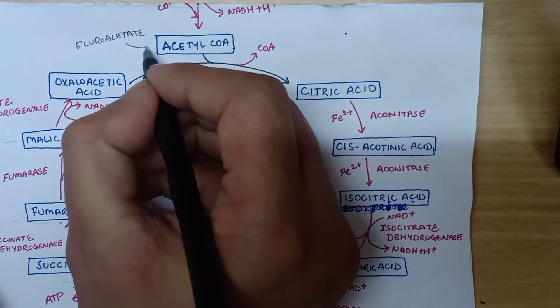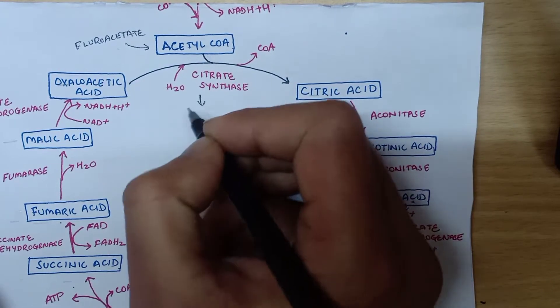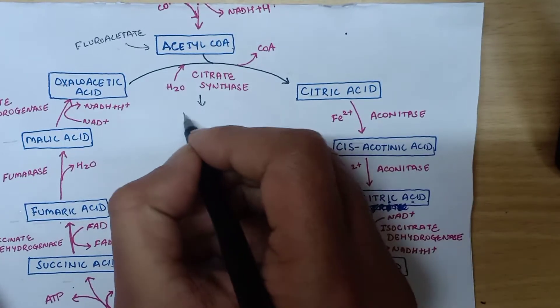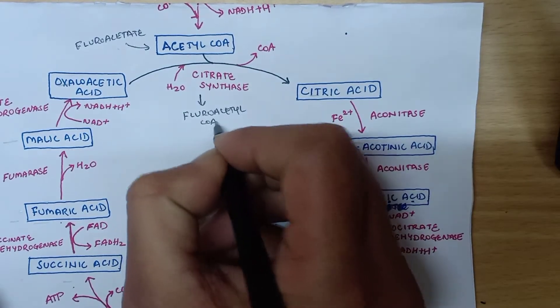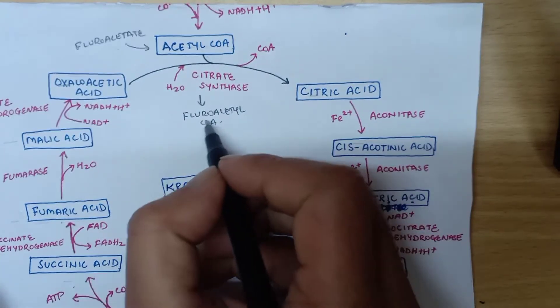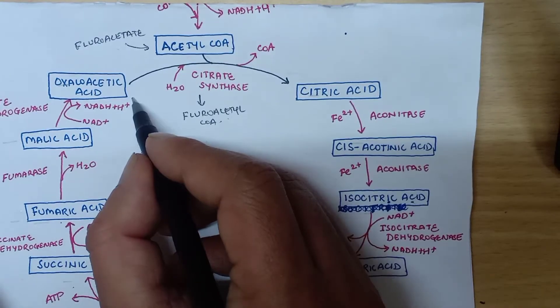Fluoroacetate will combine with acetyl coenzyme A to form fluoroacetyl coenzyme A. This fluoroacetyl coenzyme A will then condense with oxaloacetic acid and will get converted into fluorocitrate. This fluorocitrate is a potent non-competitive inhibitor of aconitase, so it will inhibit aconitase.